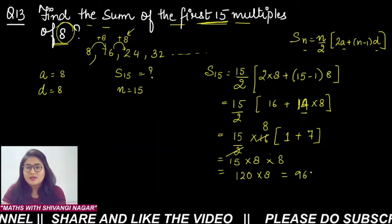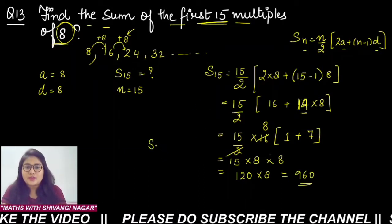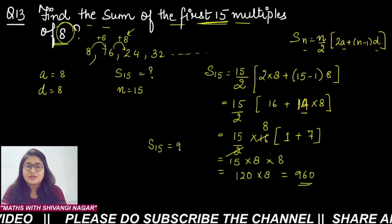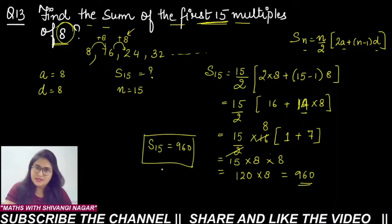is 960. So in this question, the sum of 15 terms is 960. The sum of 15 terms in this type of AP where we have the multiples of 8 is 960.